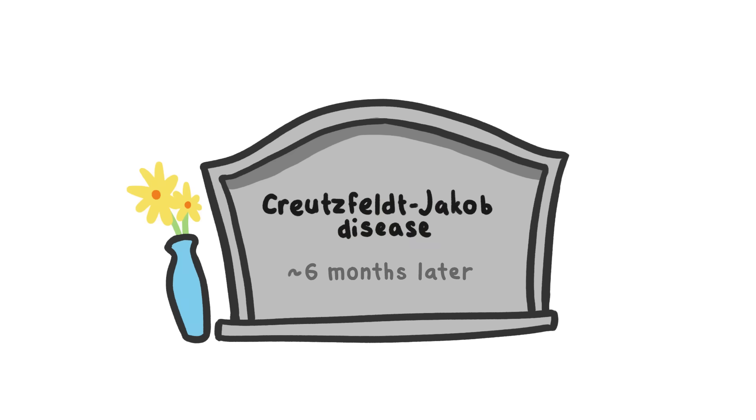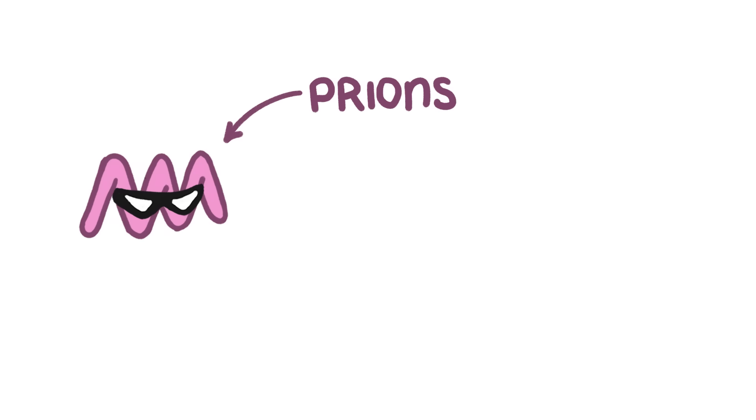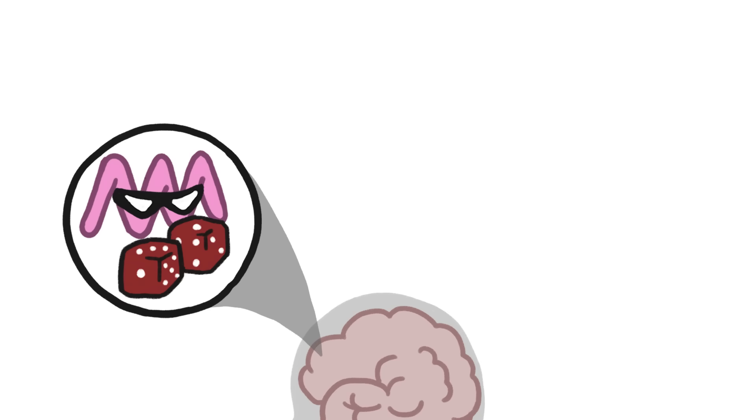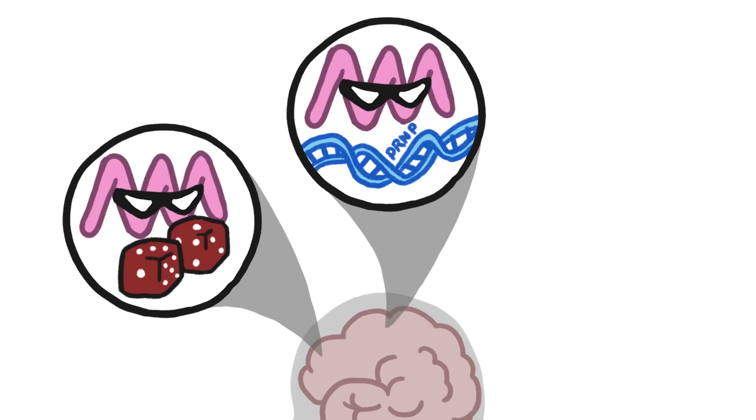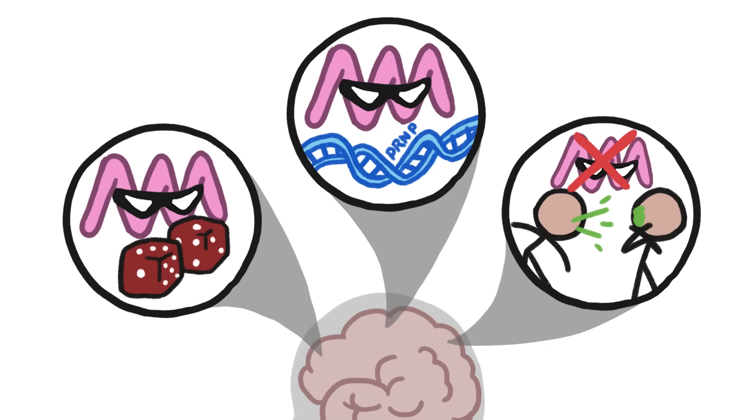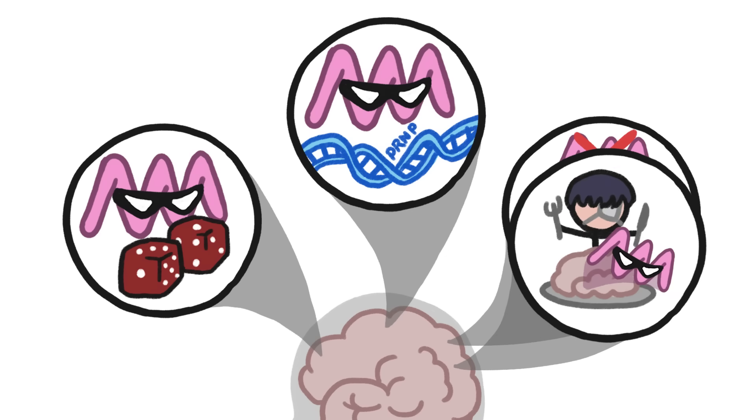These rogue proteins are called prions, short for protein infections. Prions can get into a person's brain in a few ways. Most of the time, it happens by sheer chance, a random case of molecular origami going awry. But the misfolding can also, very rarely, be encoded in a person's DNA. You can't catch prions like other contagious diseases, unless you actually eat infected meat.